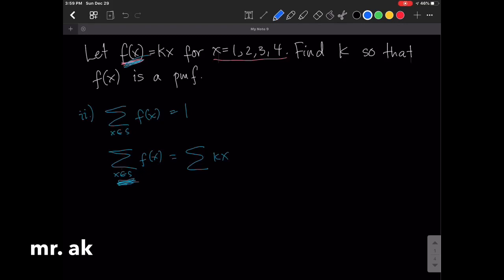So we should run the sum from 1 to 4, from 1 to 4, right? Because x takes values 1, 2, 3, and 4. So x is from 1 up to 4.